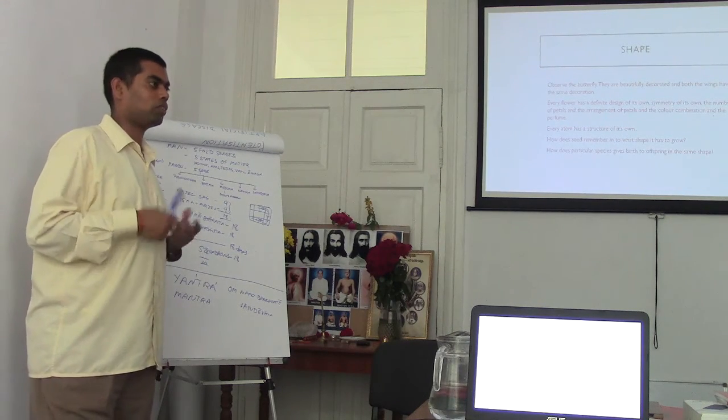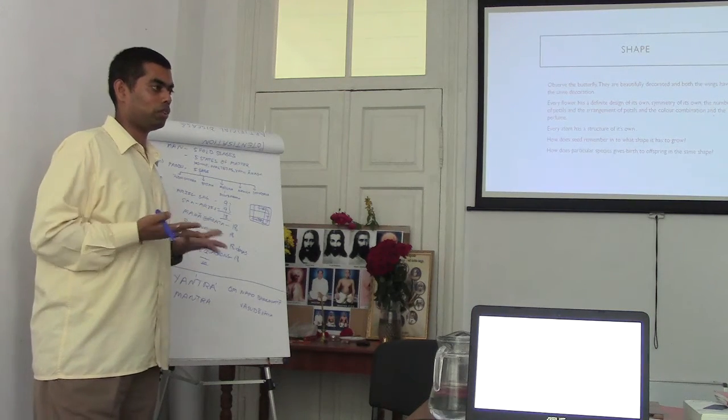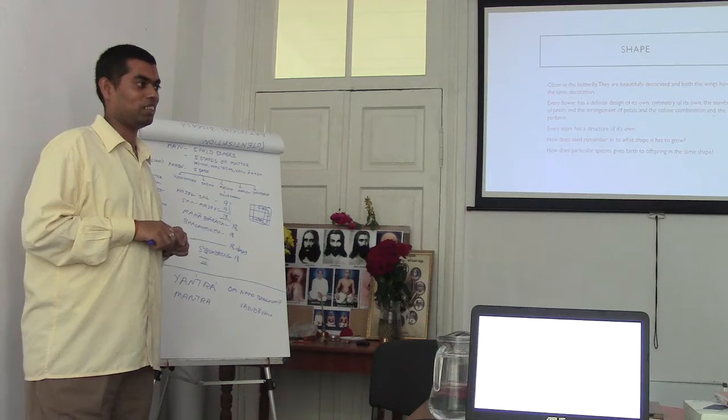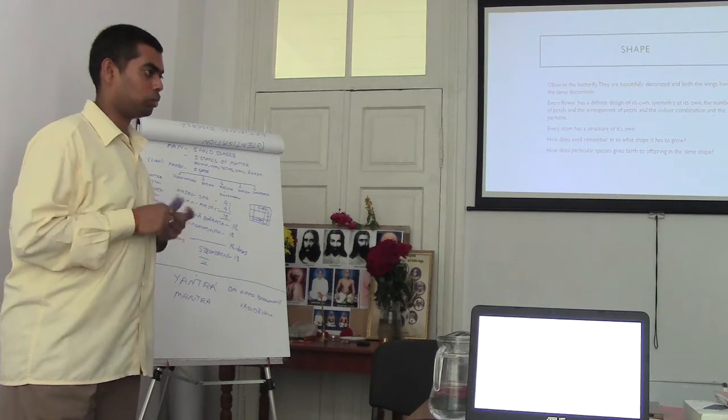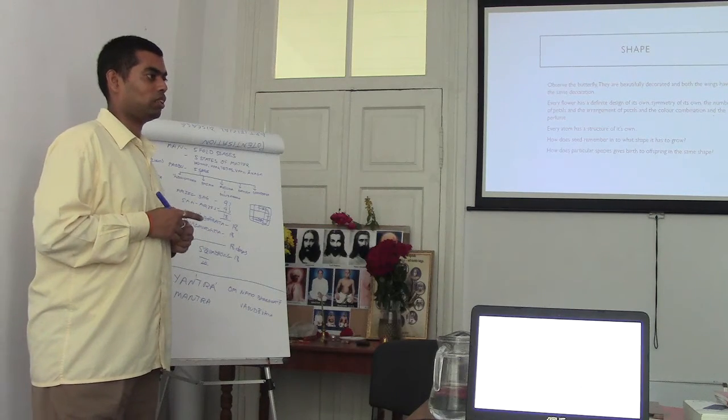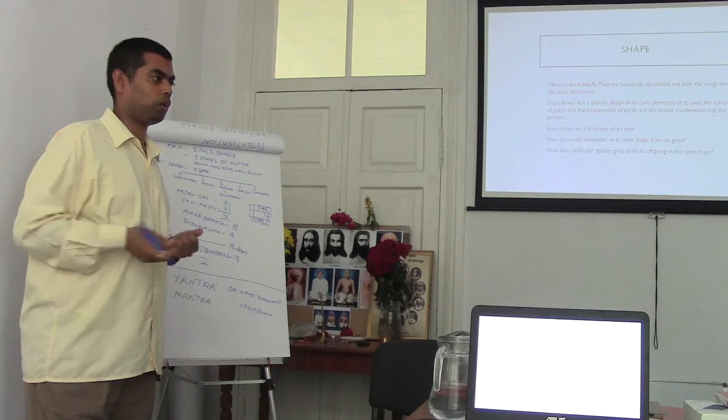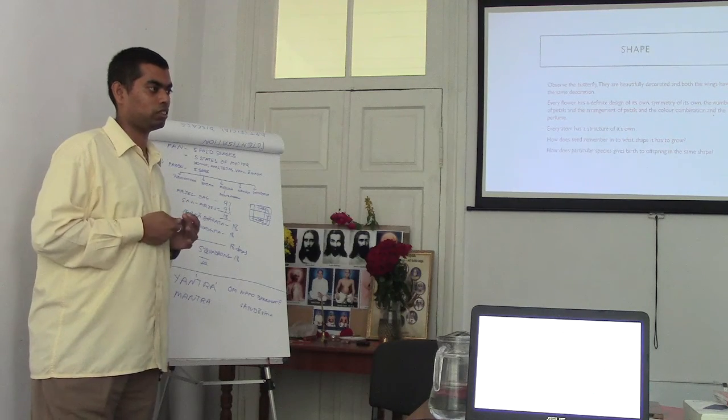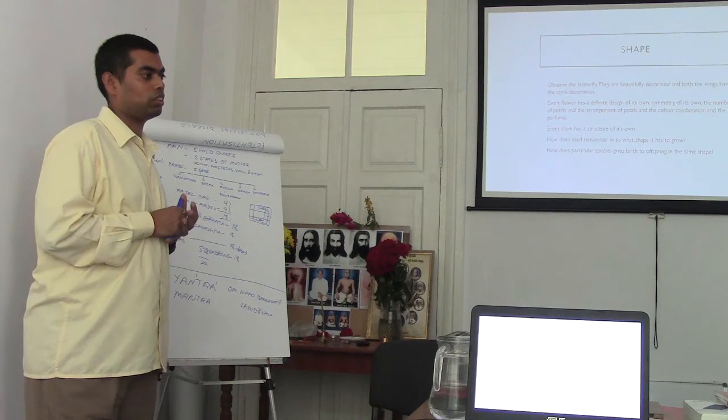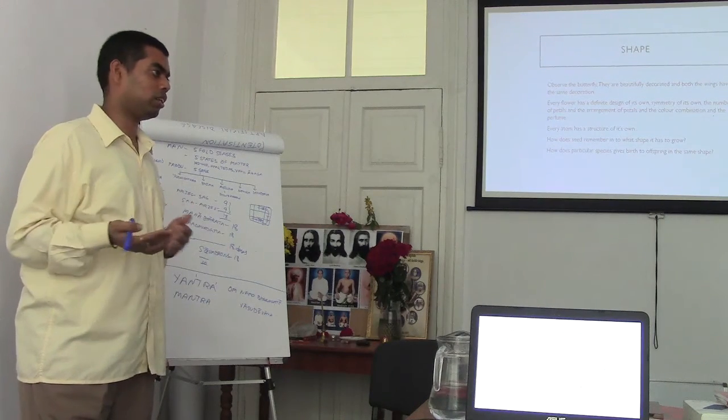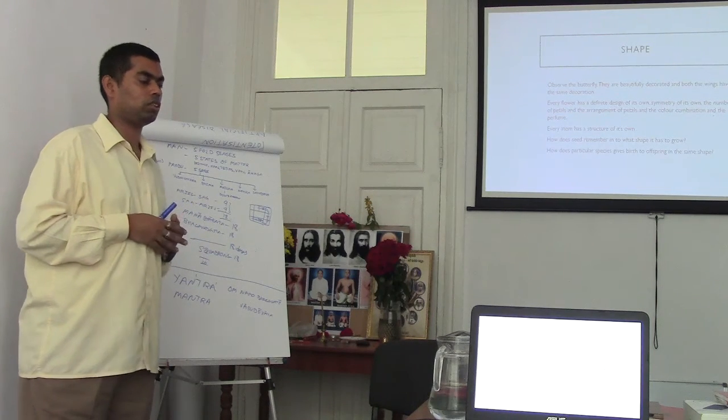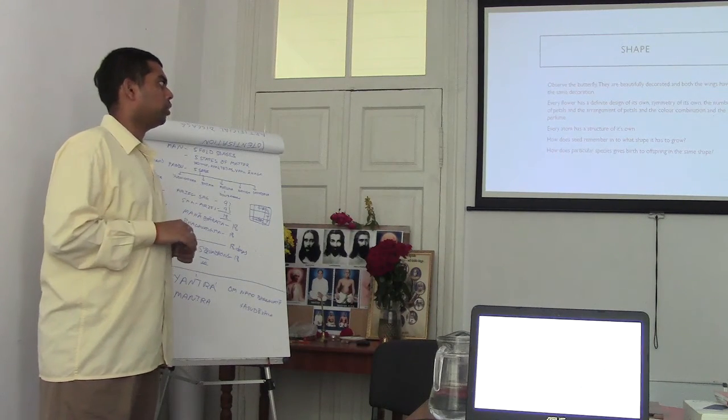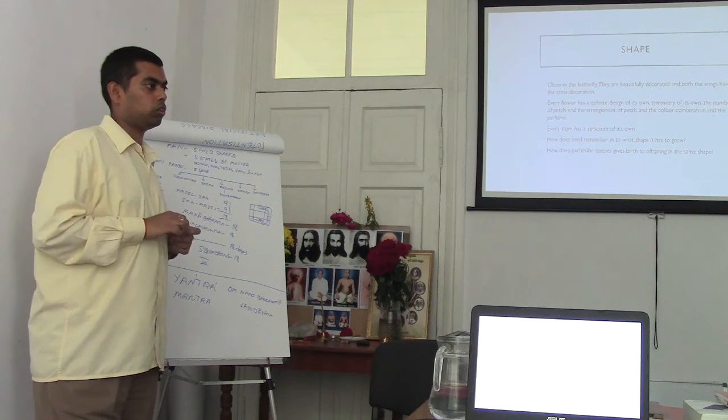If you see an atom, if you see a carbon atom, always the number of electrons and protons are fixed in it. It is possible to change with external influence. We can make isotopes of atoms by changing the number of protons. But naturally, in its existing state, it always has a fixed number. A fixed shape and also every flower has its own design, own symmetry. If you observe a beautiful butterfly and observe both the wings, how difficult if you have to design with the same symmetry?